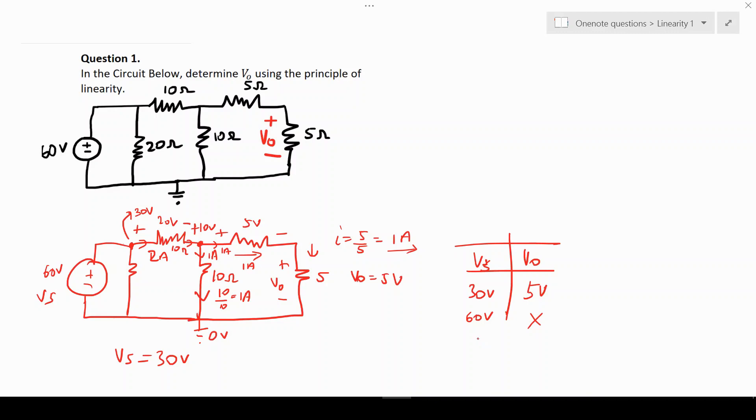In order to solve for X, we say X over 5 equals 60 over 30, which is 2. Therefore, X equals 5 times 2, which gives us 10 volts. Therefore, V₀ equals 10 volts.